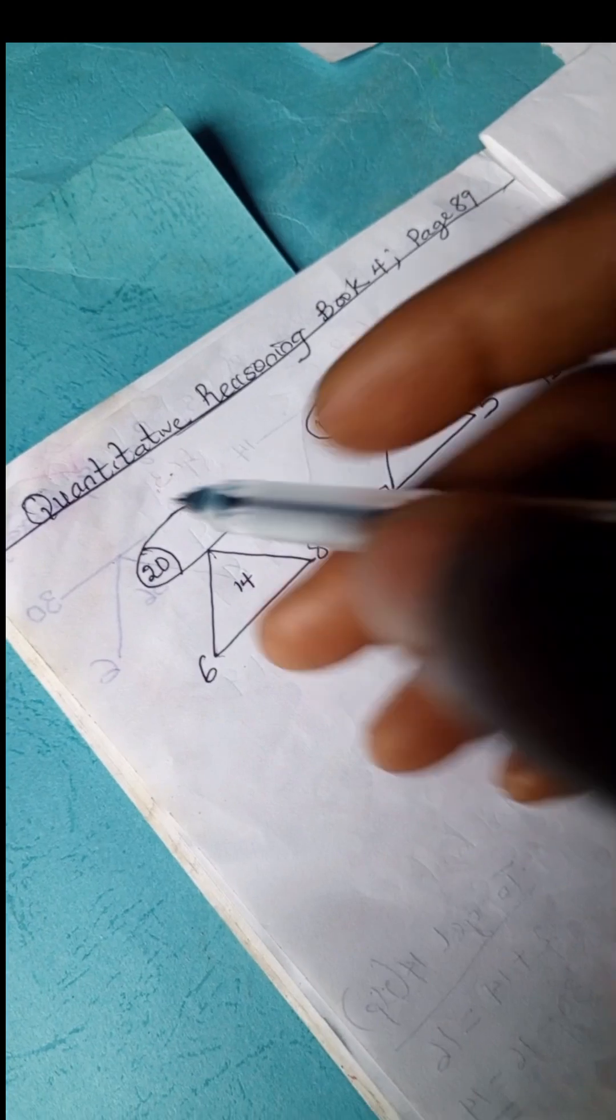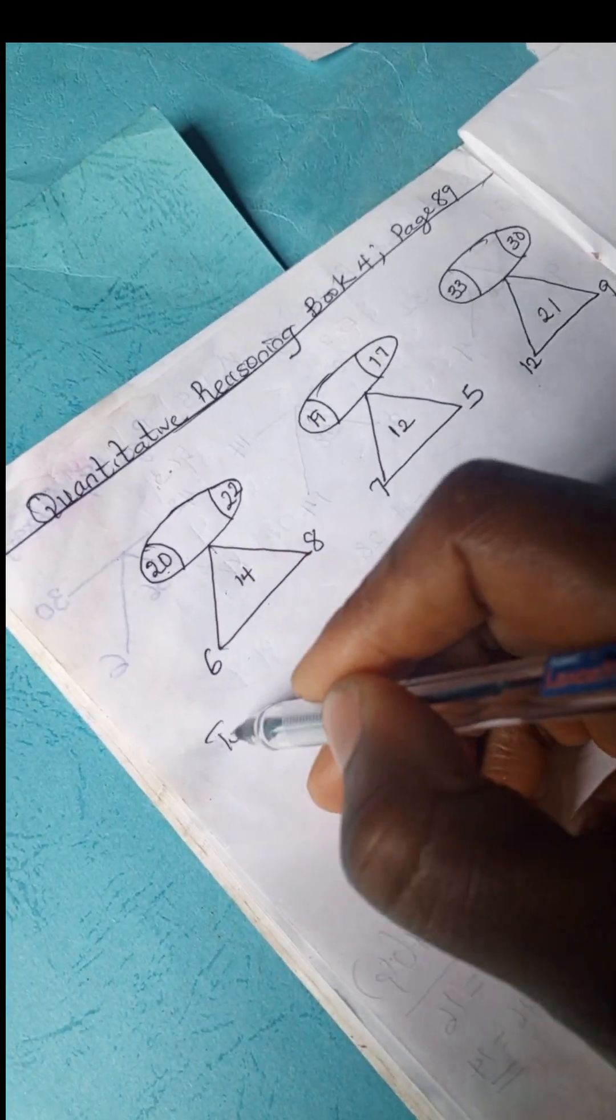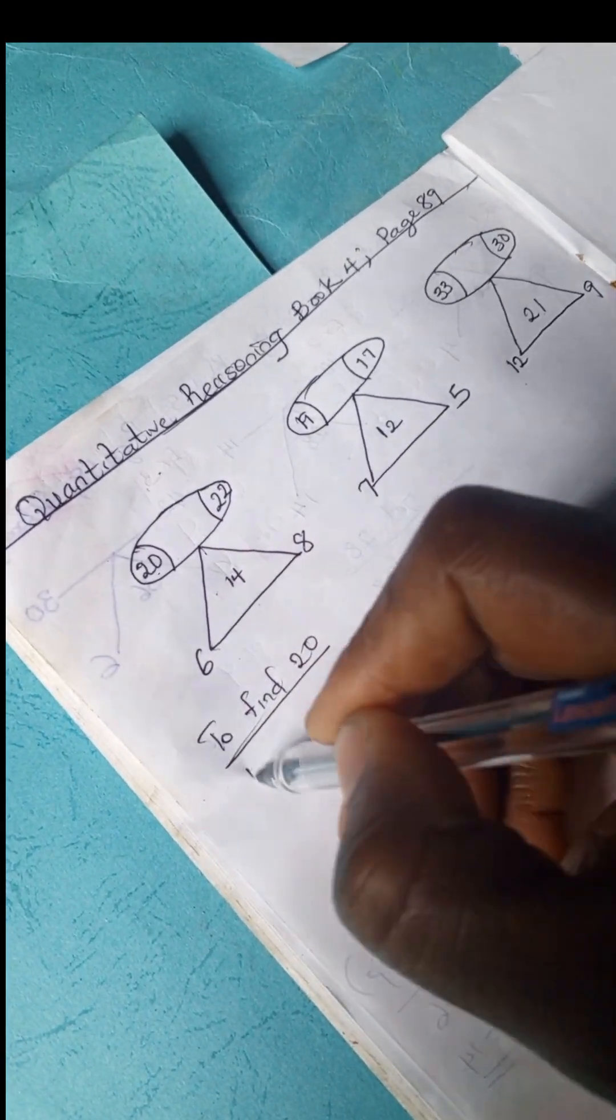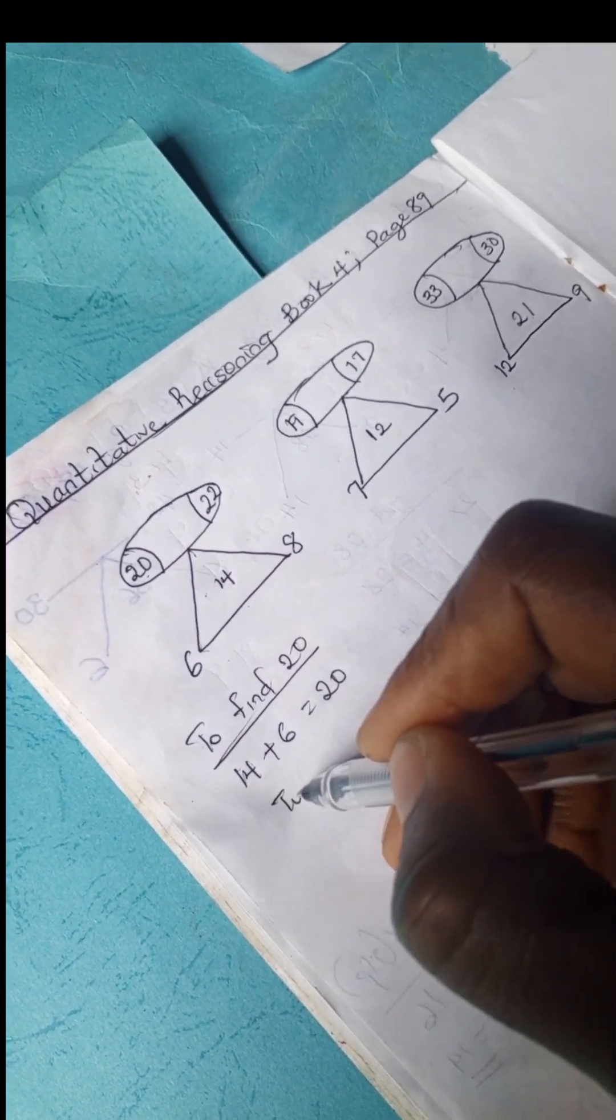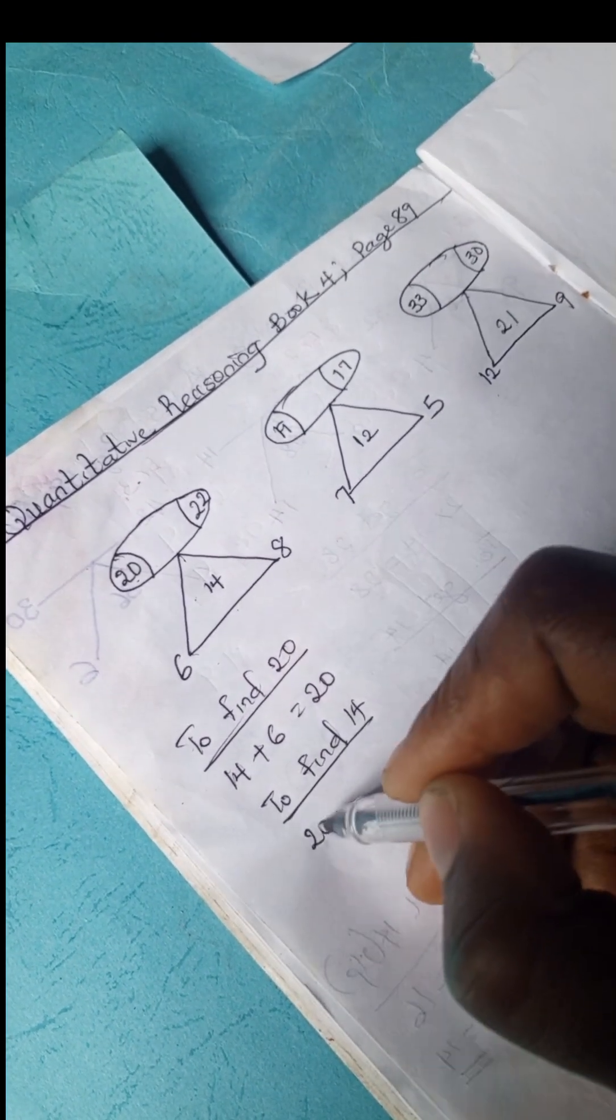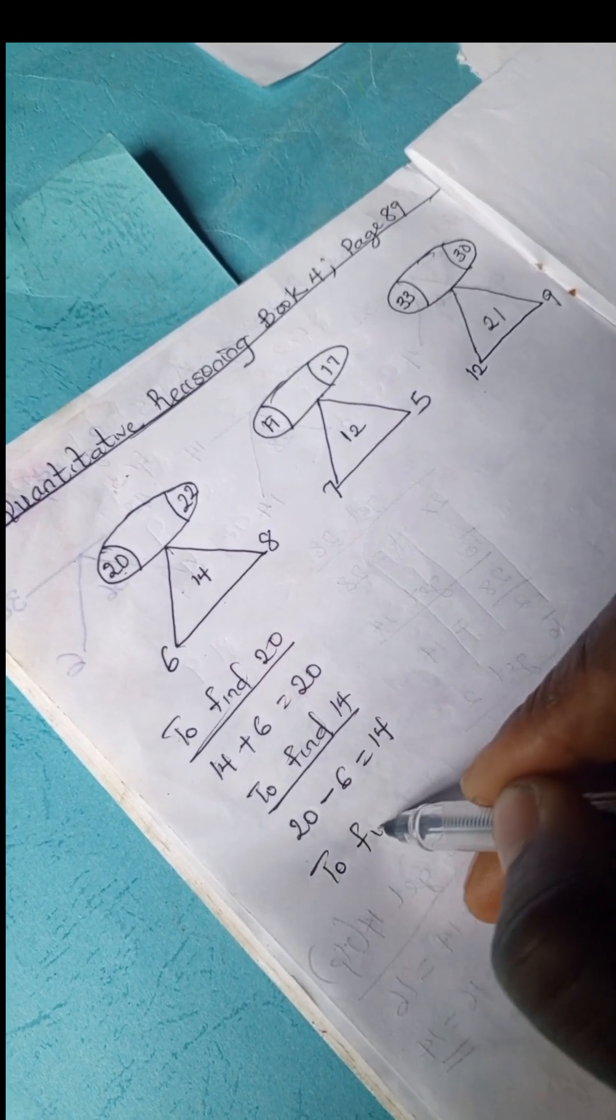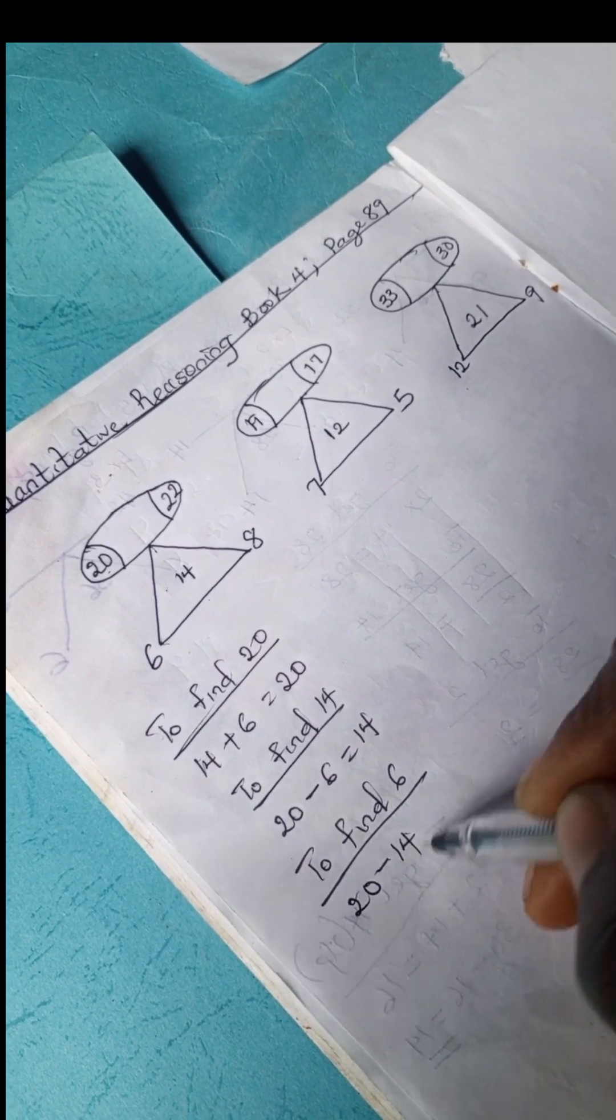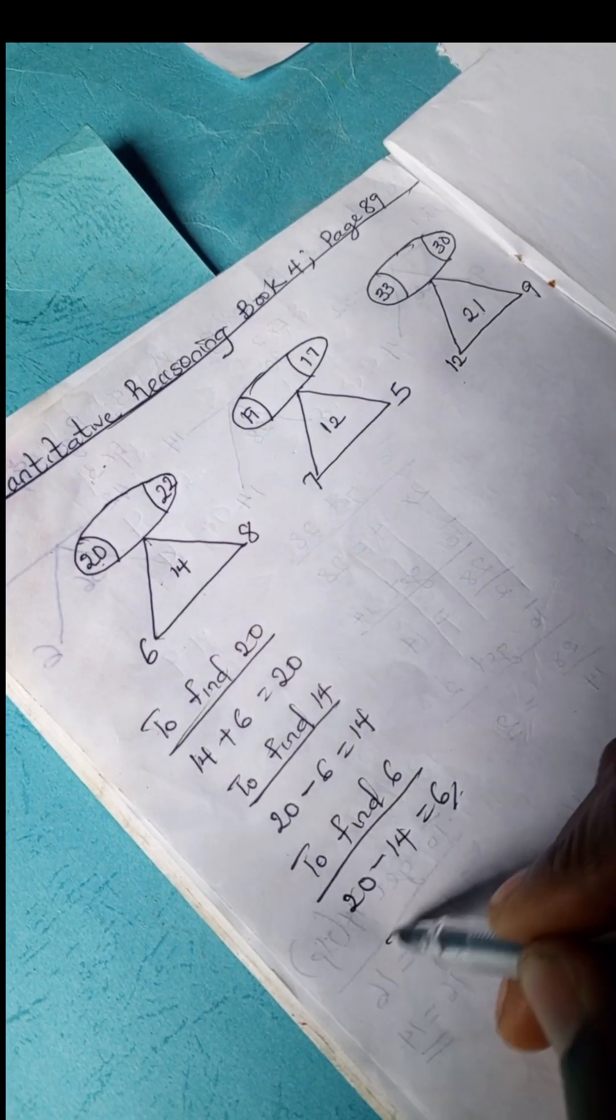So we're going to be working on this. Let's start with this. Let's find 20. We have 14 plus 6 equals 20. Hence to find 14, you simply subtract 20 minus 6 is 14. And to find 6, we have 20 minus 14, we have 6. So we've done, we're done with this part.